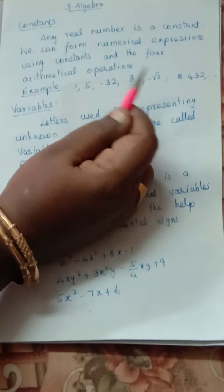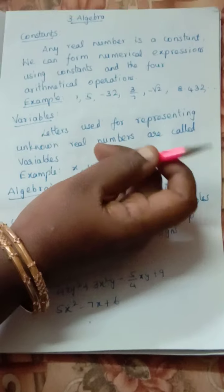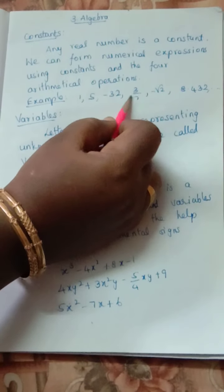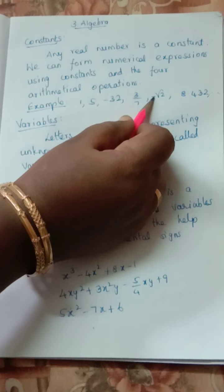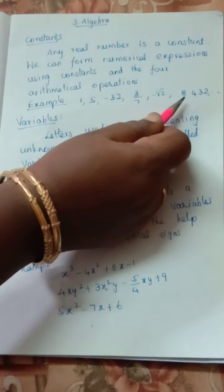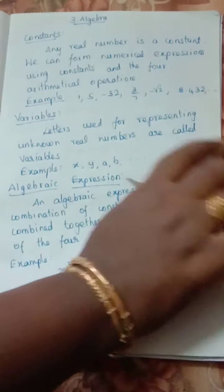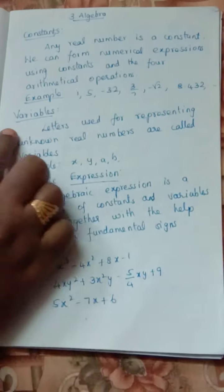Arithmetical operations means addition, subtraction, multiplication, division. For example, division: 3 by 7, minus root 2, decimal numbers — all real numbers are constants.